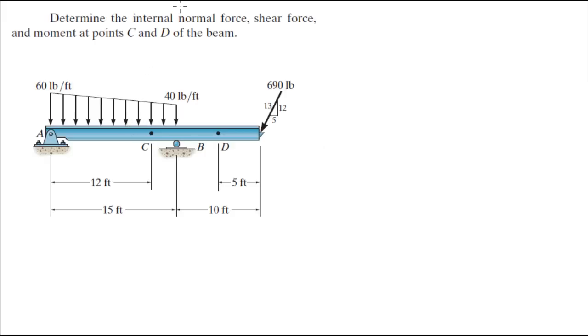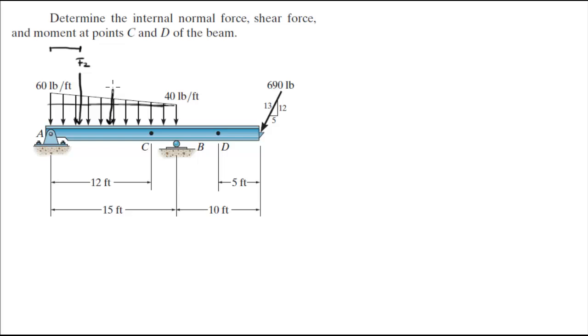For more videos, visit forthesakeofducation.com. Let's do this problem: determine the internal normal force, shear force, and moments at both point C and point D. The first thing we need to recognize is that we have two distributed loads — a rectangular distributed load and a triangular distributed load. The triangular distributed load produces a force F2 acting one-third from the long edge, and the rectangular distributed load acts at the middle, called F1.